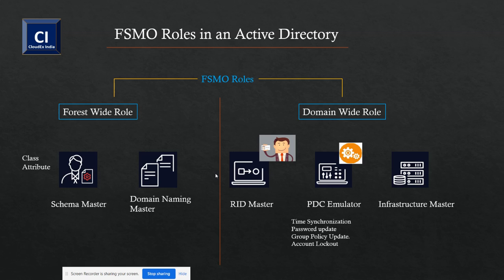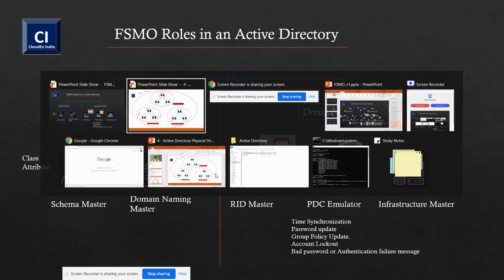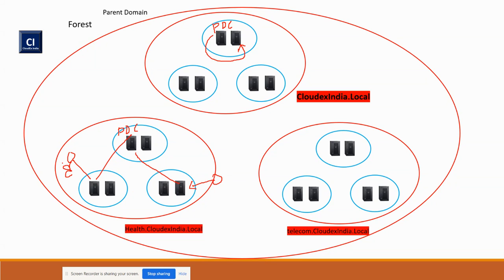Account lockout is also handled by your PDC emulator. Bad password or authentication failure — if a user hits multiple wrong passwords and connects to a domain controller, the error message you see (either username or password is incorrect) is represented from this particular PDC master to your system.